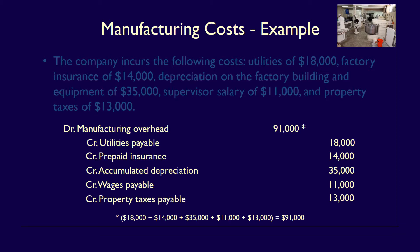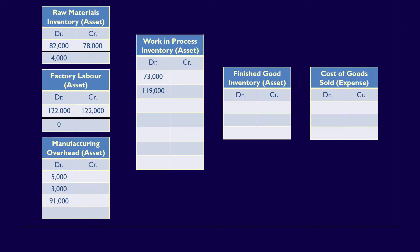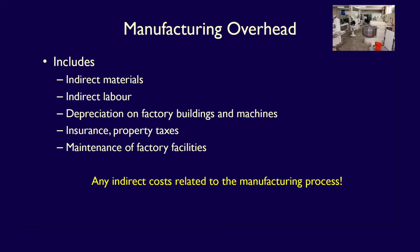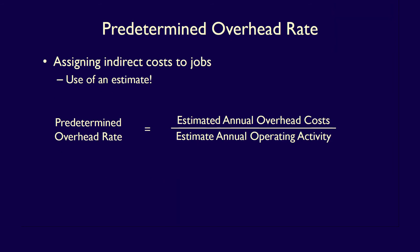Going back to our original entry, we update the T-accounts with a debit of $91,000 to manufacturing overhead, giving us $99,000 total in that account. Remember, actual direct material and actual direct labor could be charged directly to work in process because they were directly traced to production. However, manufacturing overhead relates to the whole production process, not to any specific job. Since we can't trace these costs to any particular job, we must assign manufacturing overhead using an estimate.